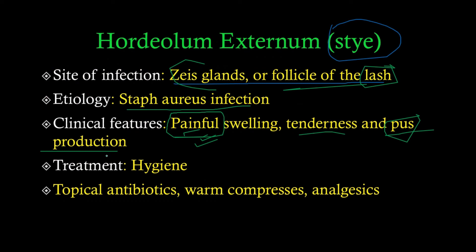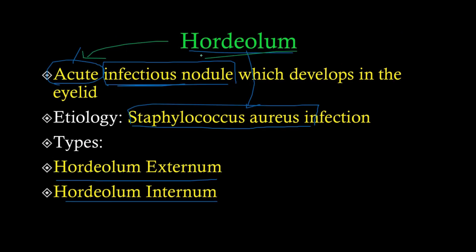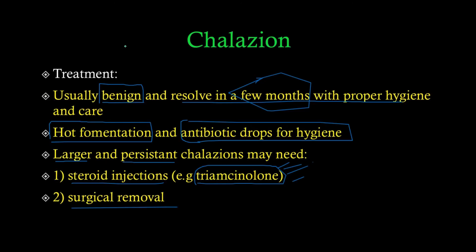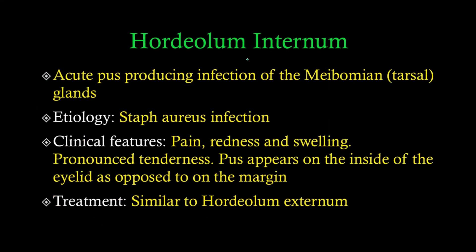Treatment of hordeolum externum includes hygiene, topical antibiotics, warm compresses, and analgesics — analgesics are added here because of the pain, unlike in chalazion. Chalazions are chronic inflammations that do not usually produce pus, while hordeolums, being acute inflammations, produce pus because of neutrophil involvement.